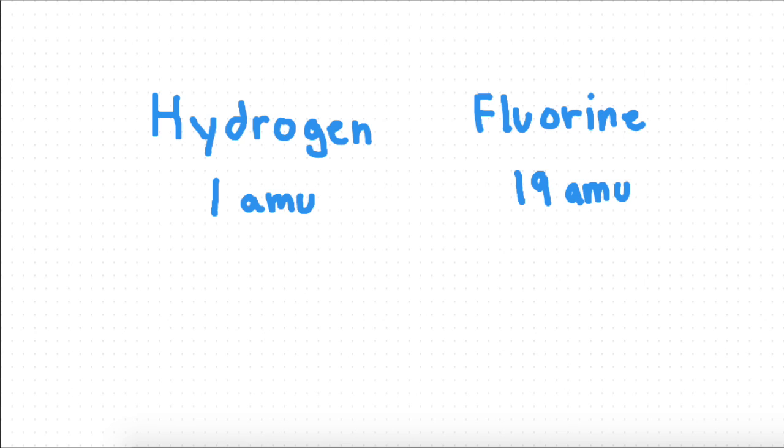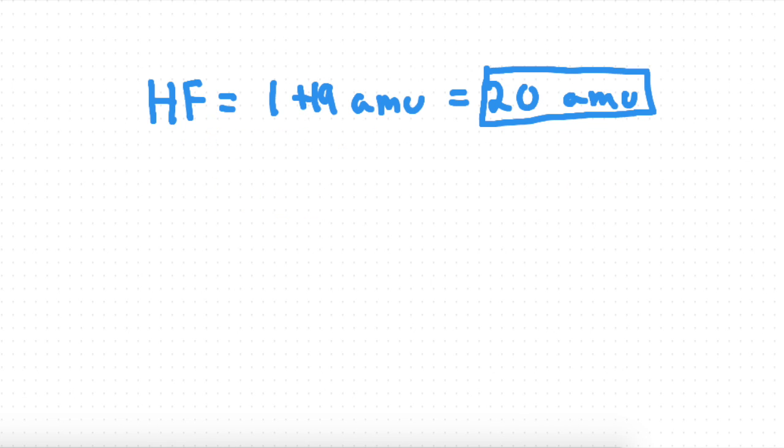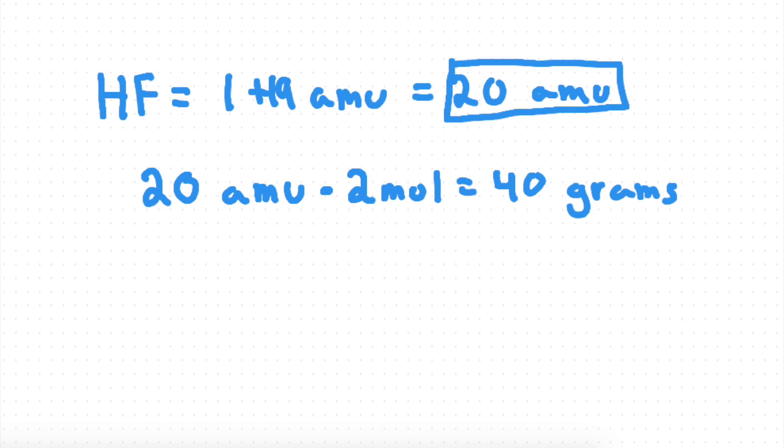Now let's all try to figure it out. HF, which is hydrogen fluoride, must equal 1 plus 19 AMU, which is just 20 AMU. Now, since there's 2 moles, we'd multiply 20 AMU by 2 moles.